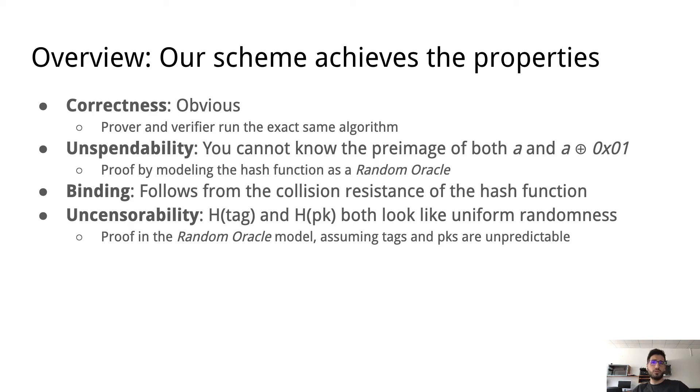Then binding directly follows from the collision resistance of the hash function. Because if someone produces two different T's that both verify for the same address, then it means they basically hash to the same thing essentially. We also prove our scheme uncensorable. In order to do this, we need to assume that the tag distribution is unpredictable. Then basically the proof is based on the fact that the hash of an unpredictable tag and the hash of a public key, which from the signature secure signature scheme Gen algorithm comes out also as an unpredictable value, that these two hashes basically both look uniformly random. We also utilize a random oracle in order to prove this.